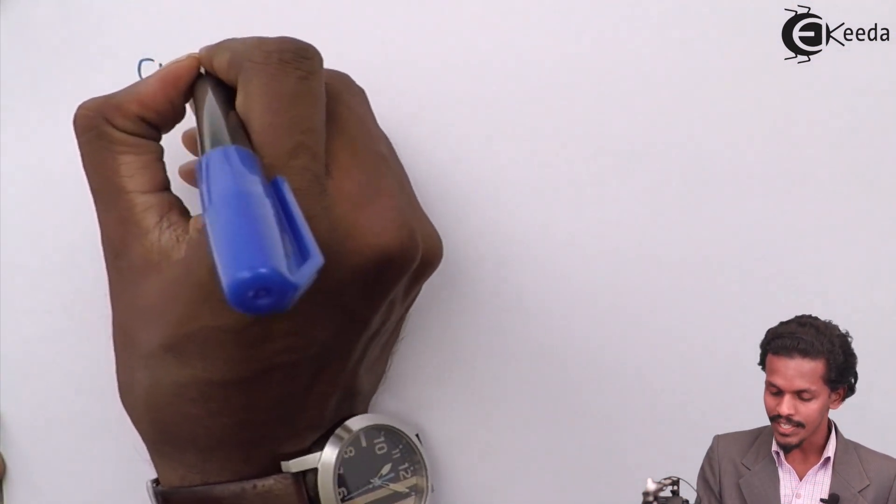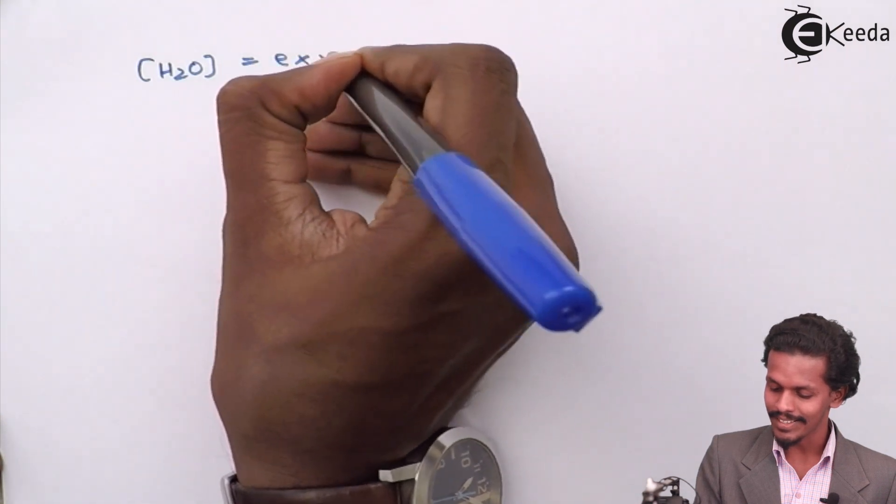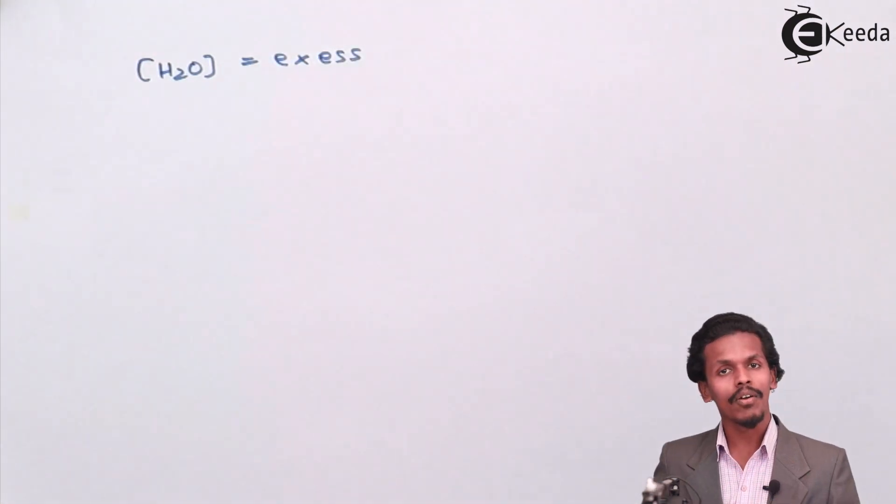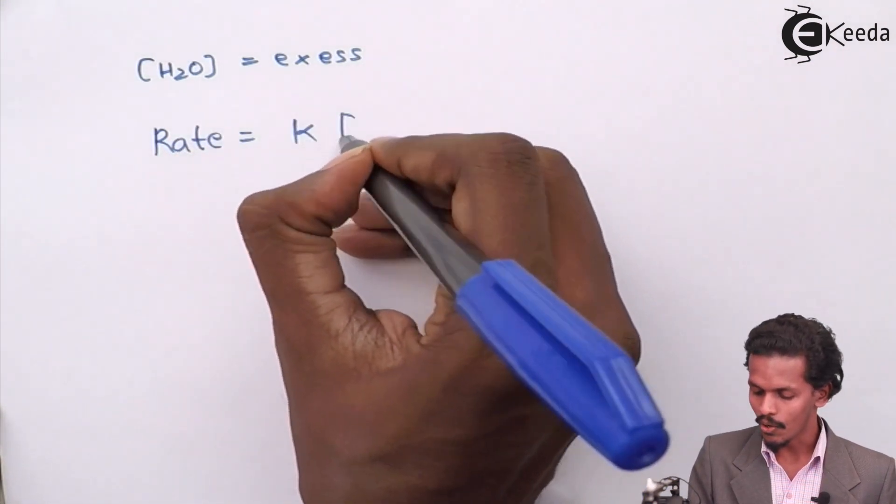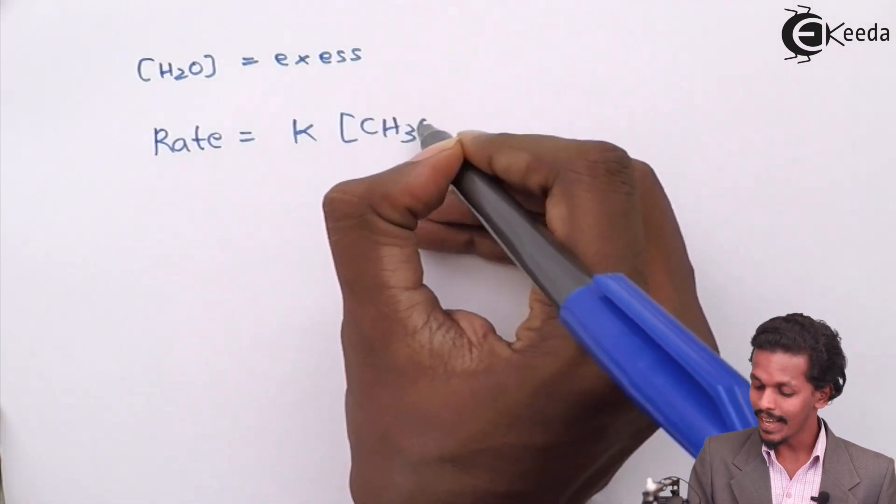Since H2O concentration is present in excess, the rate law will now be: rate equals k times concentration of methyl acetate times k'.